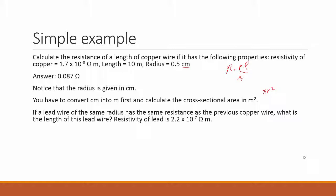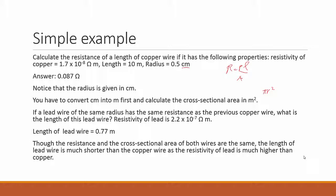Next question. If a lead wire of the same radius have the same resistance as the previous copper wire, what would be the length of this lead wire, given that the resistivity of lead is this value? The answer to this is the length of that wire is about 0.77 meters. Though the resistance and the cross sectional area of both the wires are the same, the length of this lead wire is much shorter than the copper wire, as the resistivity is much higher.